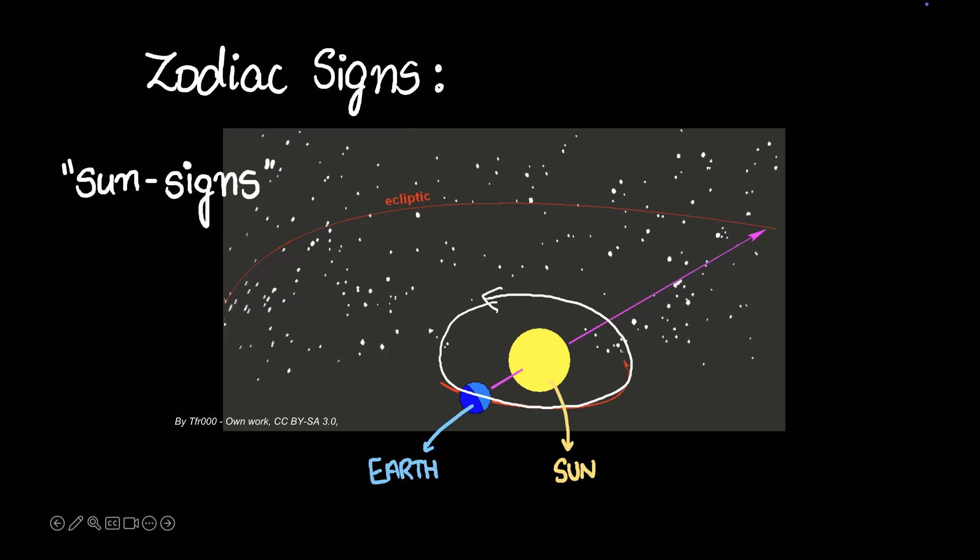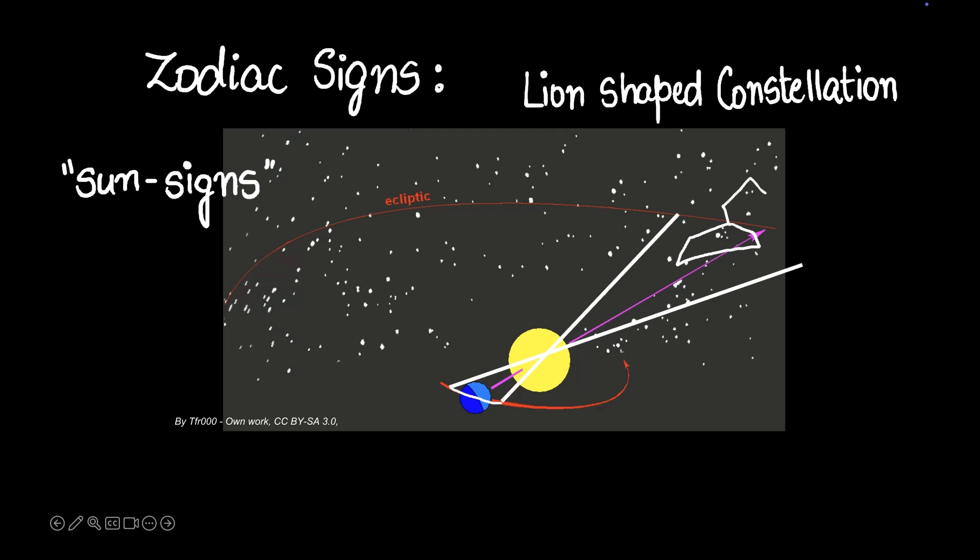Now let's remove these labels so we can talk about more stuff. So the earth would move in this direction, right? And let's say for a month it has moved that much. During that one month, behind the sun as seen from the earth, there's a constellation. Let's say that constellation looks like a lion. If that constellation looks like a lion, then we would call it the Leo constellation. So what ancient people did is during this entire month for which this Leo constellation was behind the sun, they called it the Leo month and that's how you got this Leo sun sign.